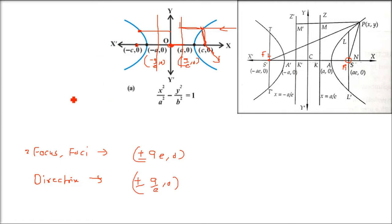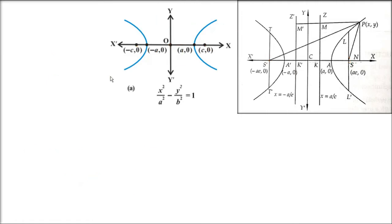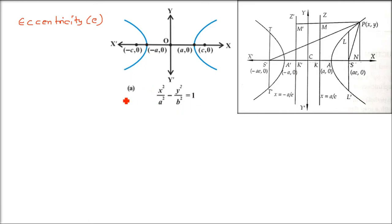One more thing: the center is currently at origin 0,0 but in problems it will be at (h, k). Eccentricity, represented by e — here is the equation x² over a² minus y² over b² equals 1. When I derived this equation, I showed that b² equals a²(e² minus 1).